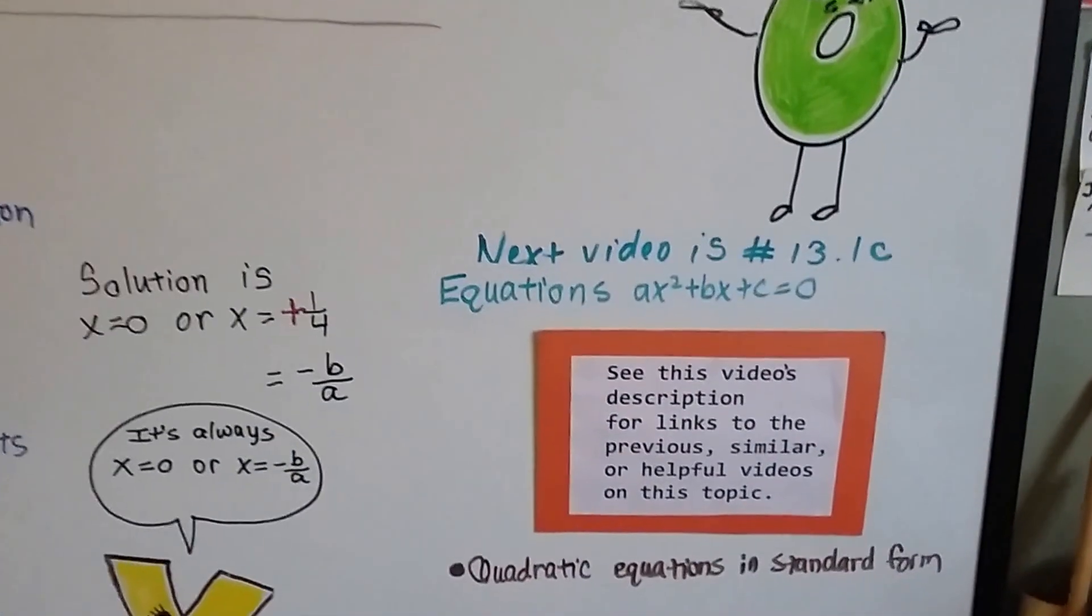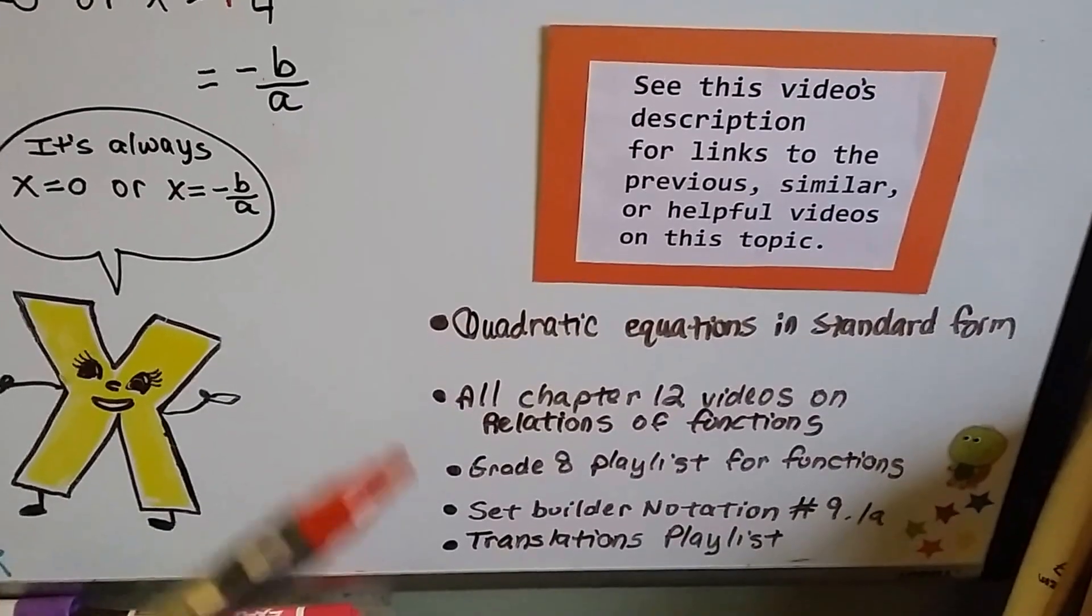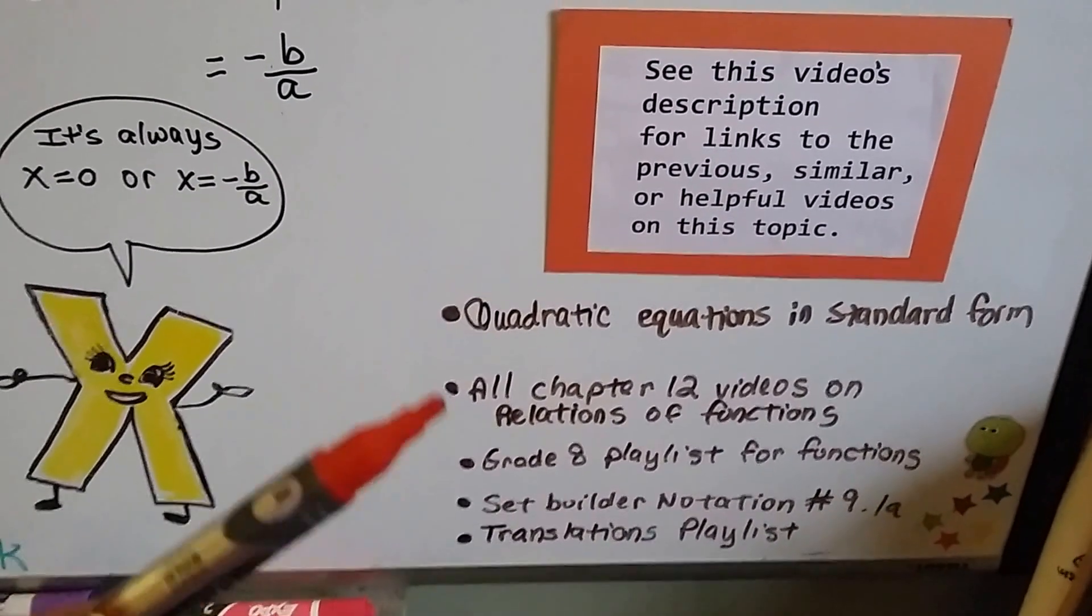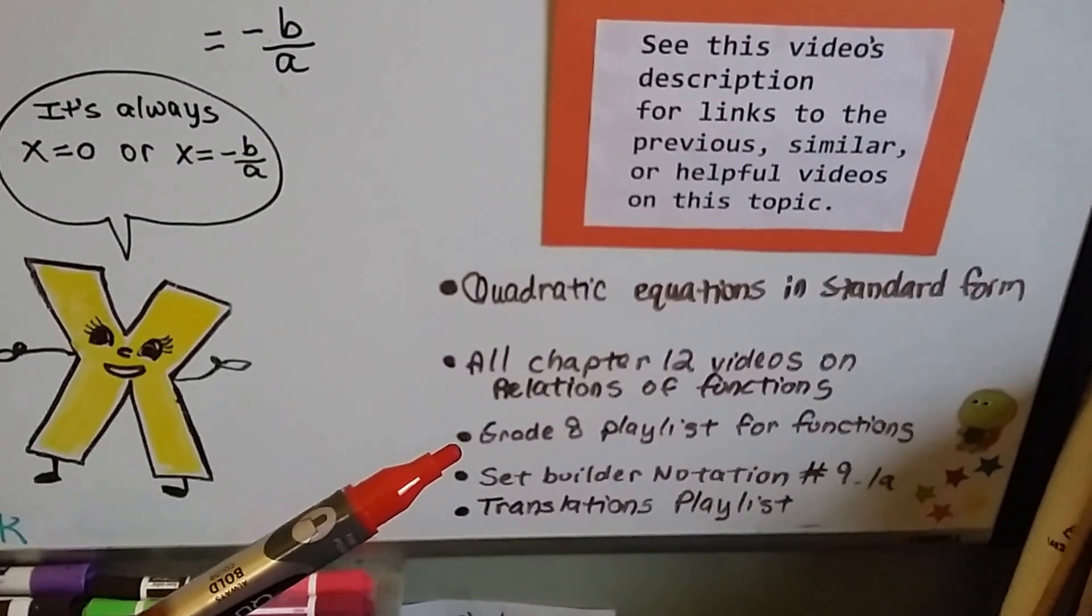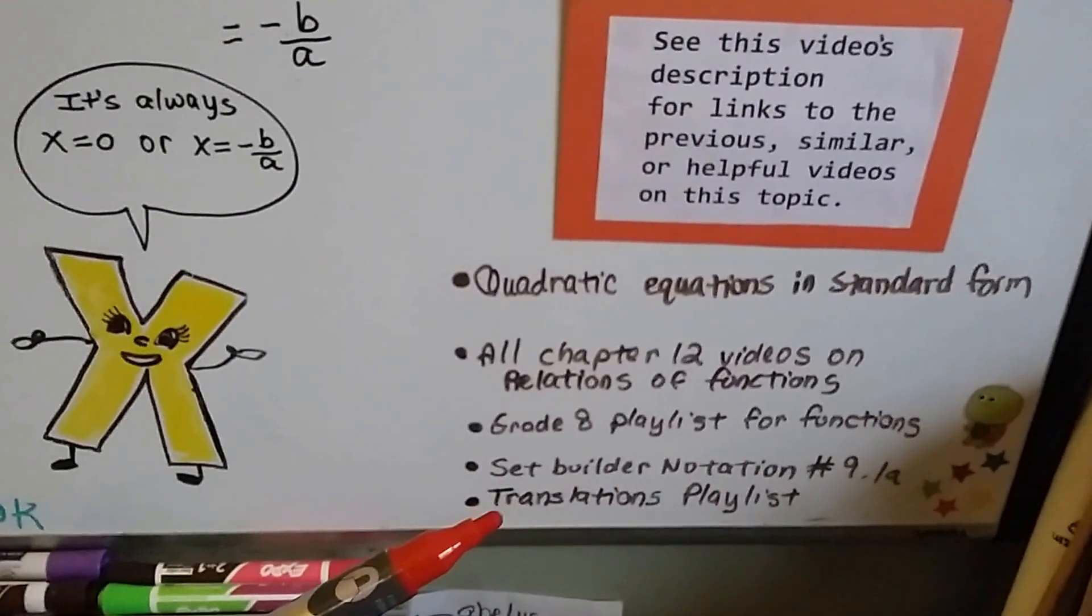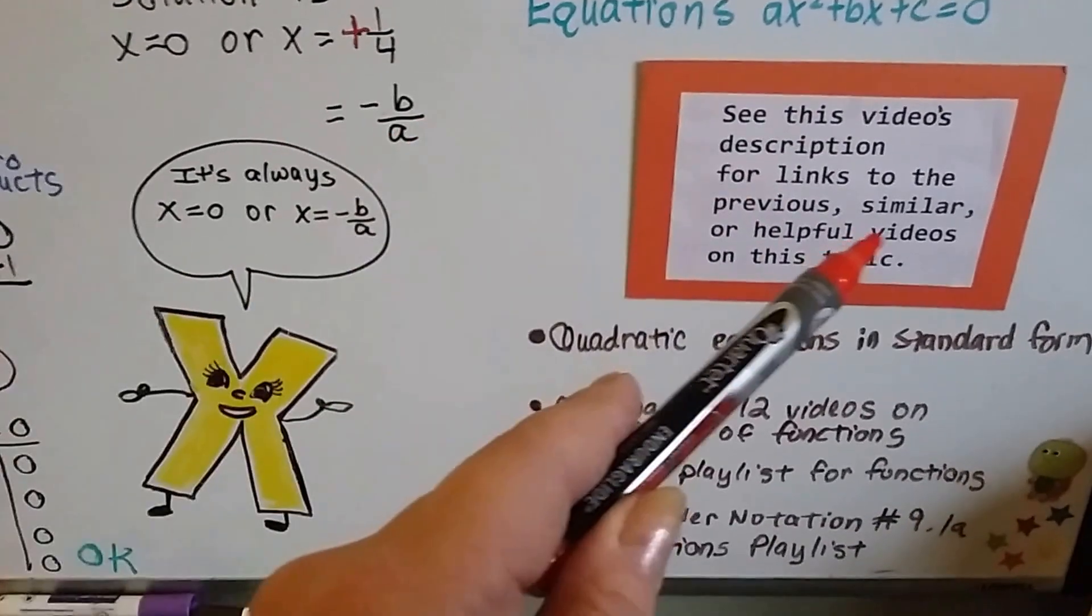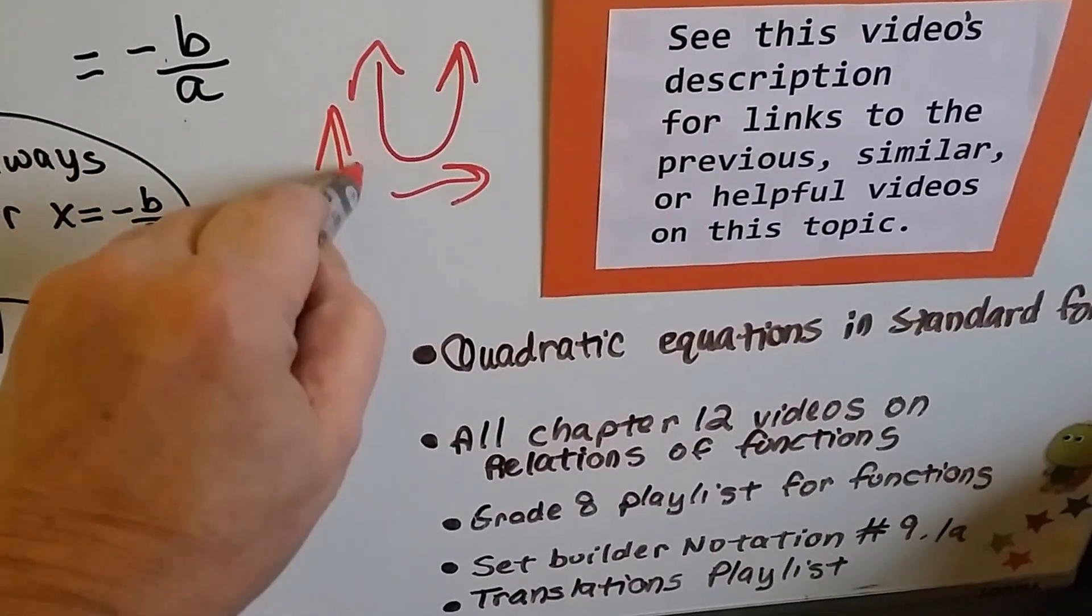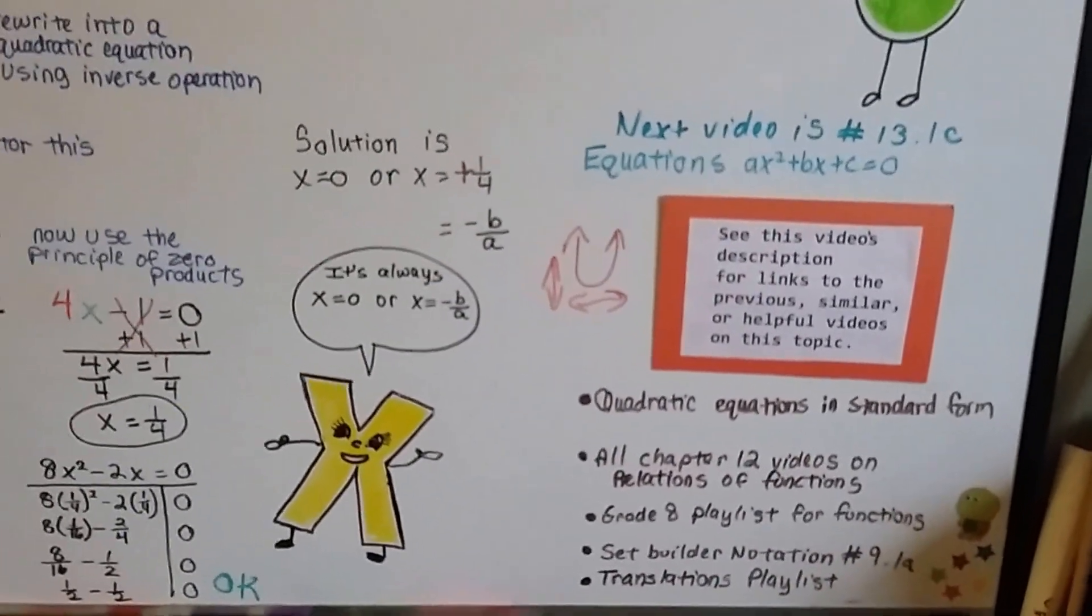Our next video is going to be 13.1c. I'm going to talk about equations that now have the plus c at the back end of it. And check this video's description. We did quadratic equations in standard form and how to tell them apart from non-quadratic to quadratic. And all the Chapter 12 videos that discussed relations of functions, there's a link to my gradient math playlist for functions, and there's a link to set builder notation in case you forgot how to do that. And there's even a translation playlist link in here because when we were graphing the parabola and it shifted a direction, side to side or up or down, that's a translation. So there's a link to my 8th grade translation playlist so you can peek at that and understand that more.